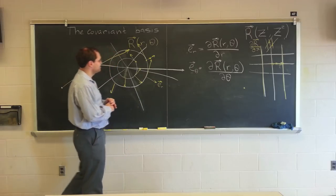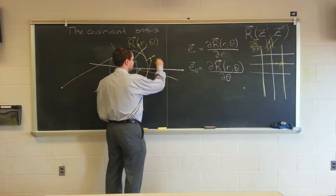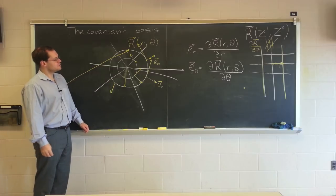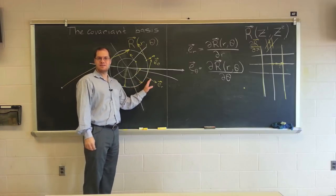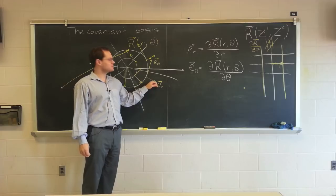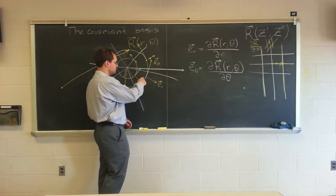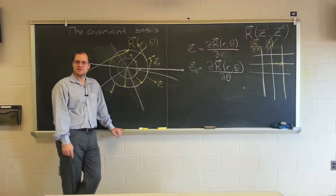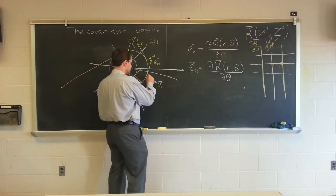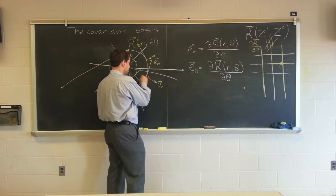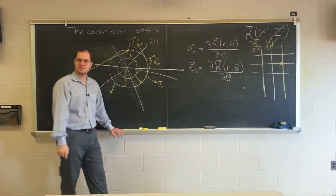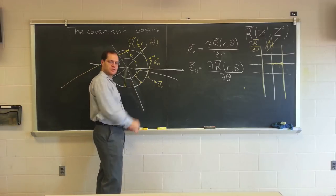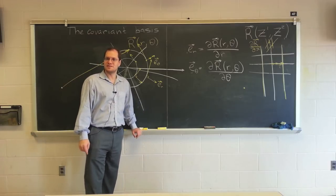So this is e sub theta. We have defined what the coordinate basis means for an arbitrary coordinate system. These things are tangent to the coordinate lines, so you can always pretty much visualize them. The angle is always 90 degrees here for polar coordinates. Coordinate systems whose covariant basis consists of orthogonal vectors are called orthogonal coordinate systems.